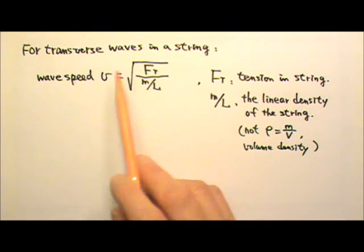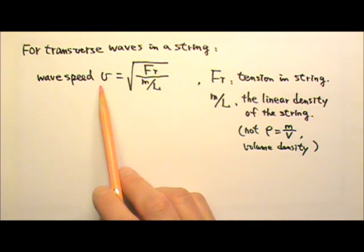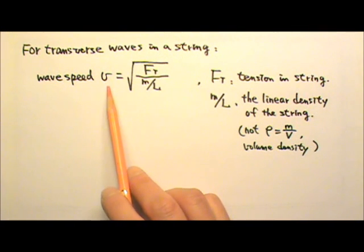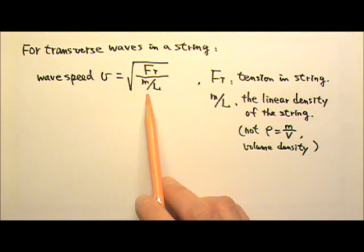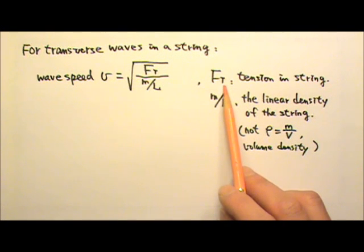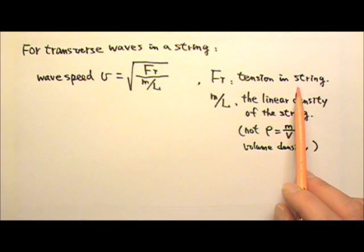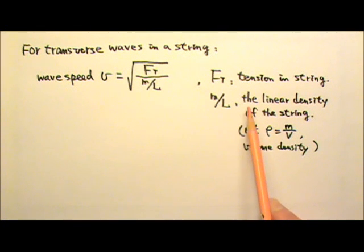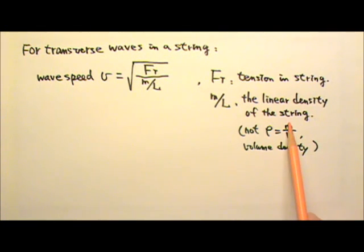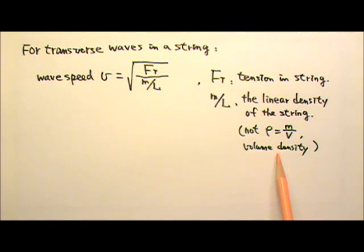For transverse waves in a string, the wave speed can be found using this equation: v equals the square root of the tension divided by mass per unit length. I'm using F sub t instead of capital T for tension to avoid confusion, because capital T is also used for period in this unit. The mass per unit length is called the linear density of the string. This is not the same as the volume density, that is, the mass per unit volume.